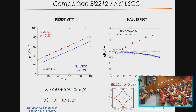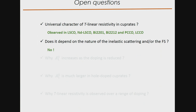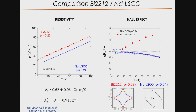Since the Fermi surface is very different between the two compounds, the Hall effect at high temperature due to inelastic scattering is also very different — yet the Hall coefficient extrapolates to a value corresponding to 1+p for both families. The temperature dependence of the Hall effect is completely different, reflecting the difference in Fermi surface. This leads me to answer the first two questions: the T-linear resistivity is now observed universally in several families — LSCO, Nd-LSCO, Bi2201, Bi2212, and the electron-doped compounds PCCO and LCCO — and it does not depend on the Fermi surface, since Fermi surfaces are very different yet the slopes are similar.